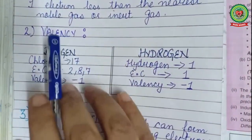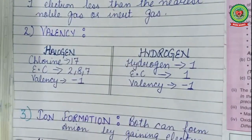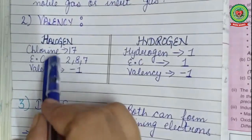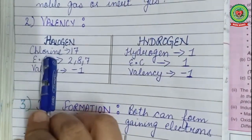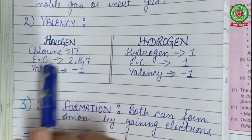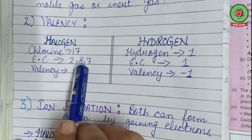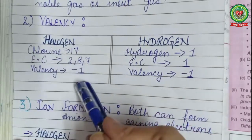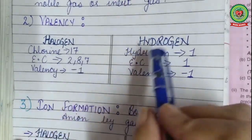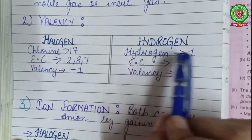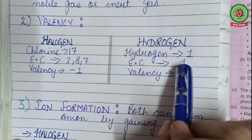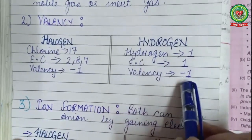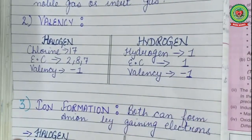The second similarity is valency — the combining capacity of an atom. Chlorine has atomic number 17 with configuration 2,8,7; it can gain one electron and become electronegative to complete its shell. Similarly, hydrogen (atomic number 1, configuration 1) can also gain one electron and become an anion, or electronegative.